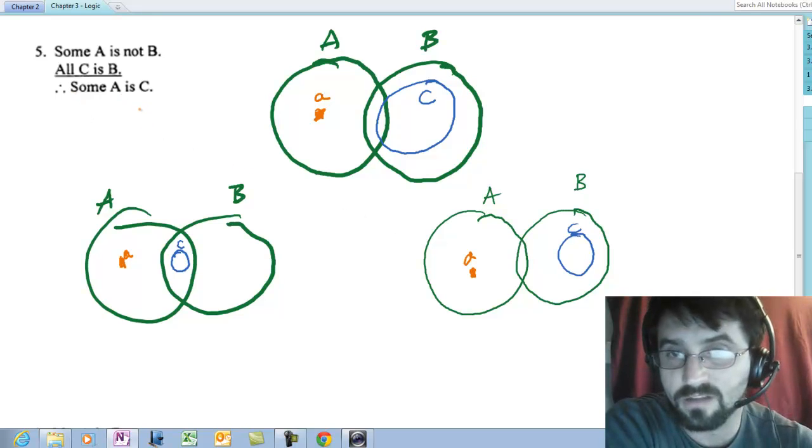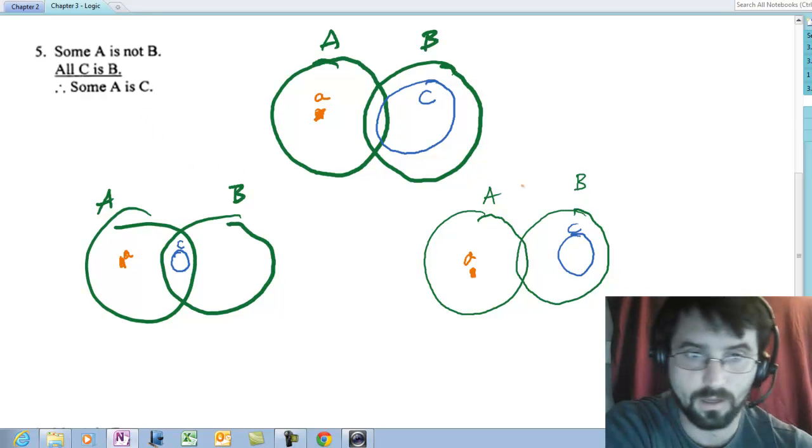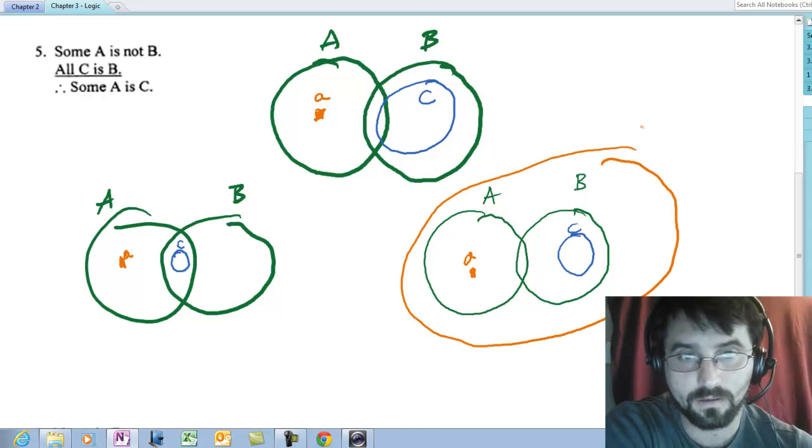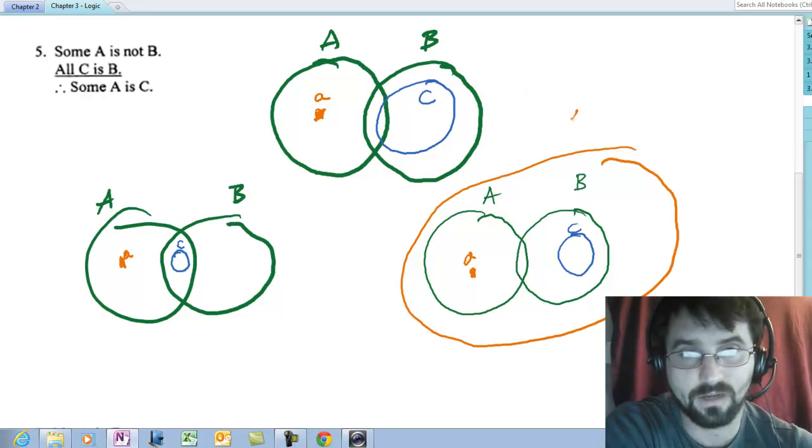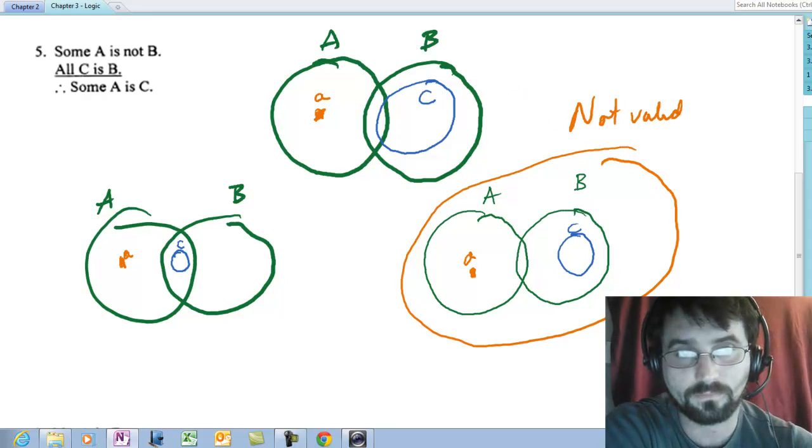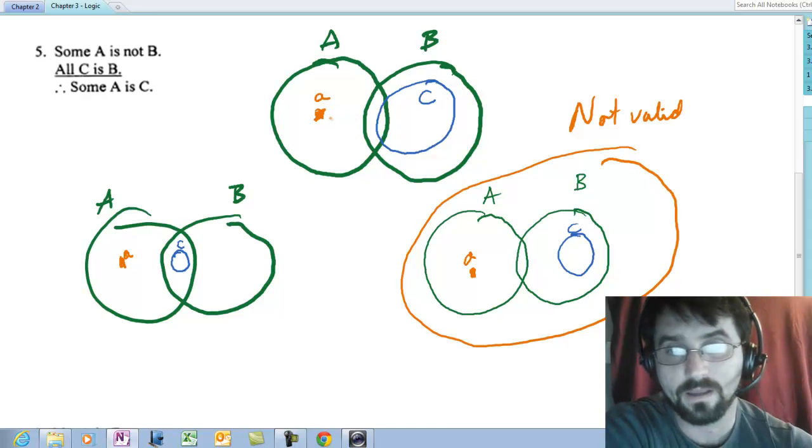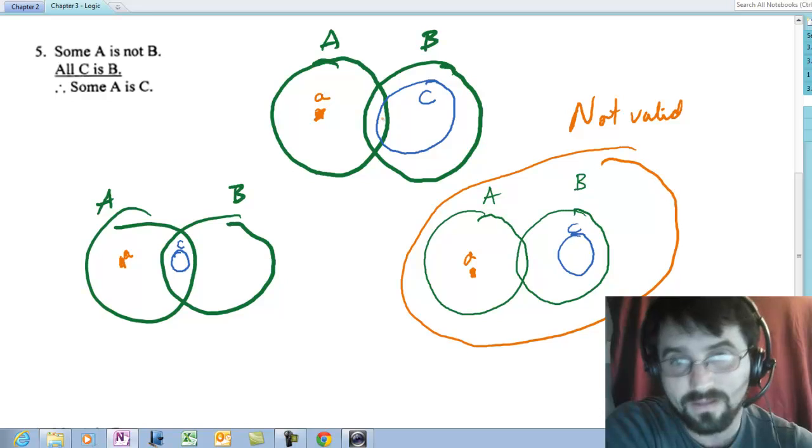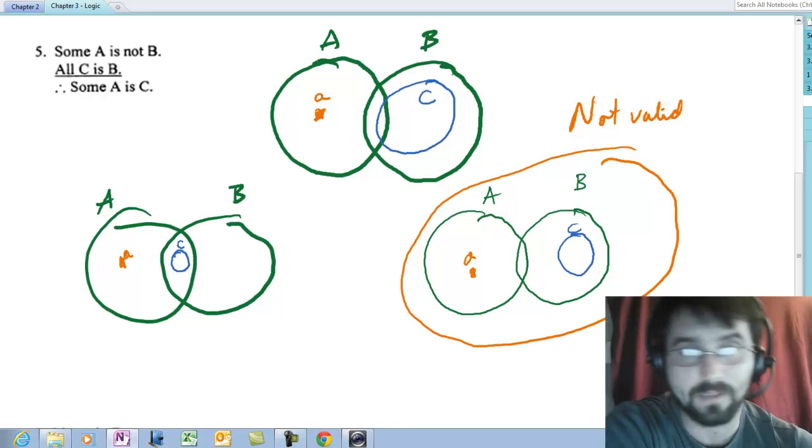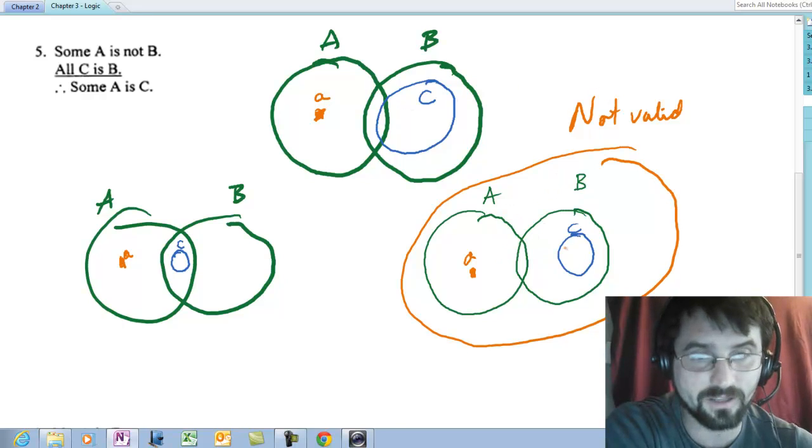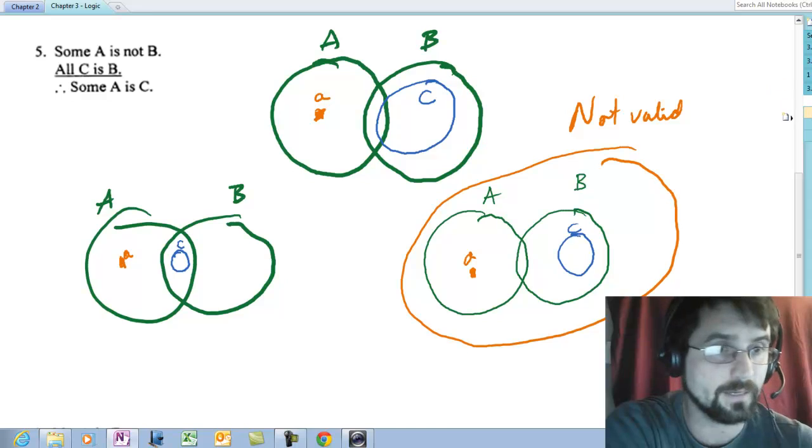Some A is C. Is that necessarily true? No, and the best counterexample is this one right here, because you can see that A and C don't necessarily have to share anything in common. So this is not valid. And even up here, you could also say it's not valid. Why? Because this little region right here in the overlap could be empty. But this is the best way to draw it because you're clearly showing that C could be completely disjoint from A.